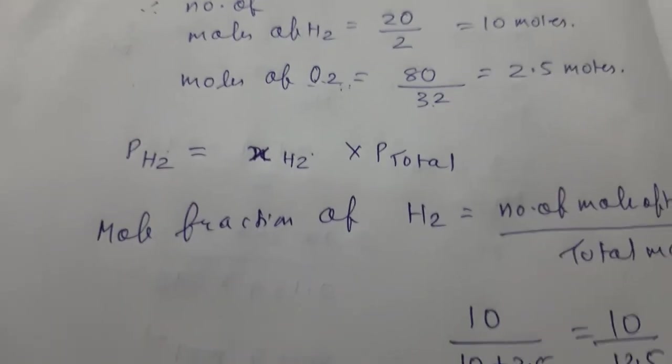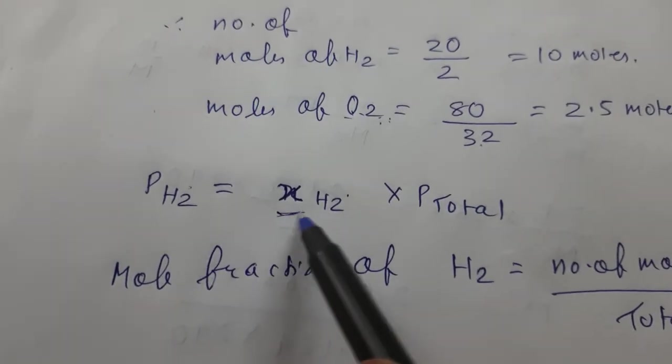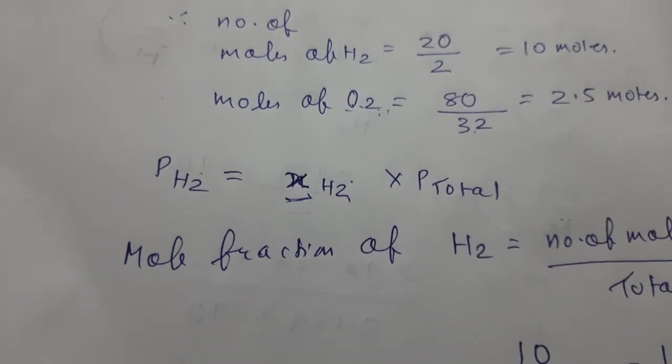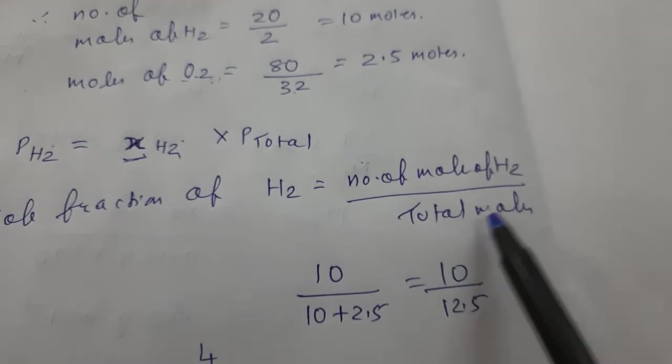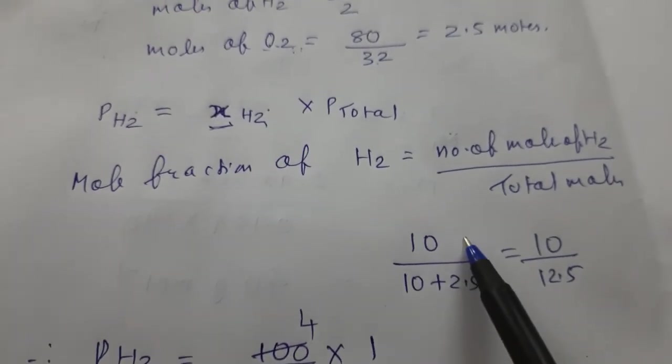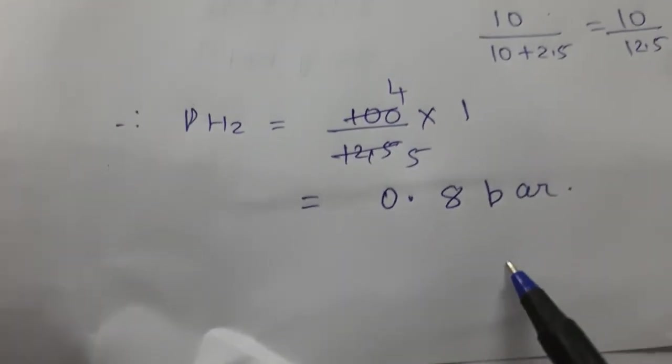Moles of O2 we have taken out: 80 divided by 32, equals 2.5 moles. So partial pressure of H2 is given by mole fraction. Mole fraction of H2 into P total. This formula we have studied in Dalton's law of partial pressures. So mole fraction of H2 equals number of moles of H2 divided by total moles.